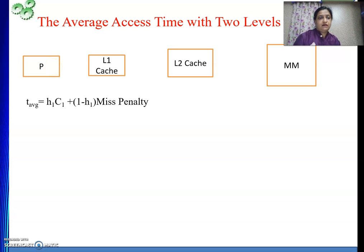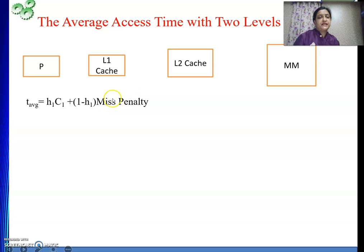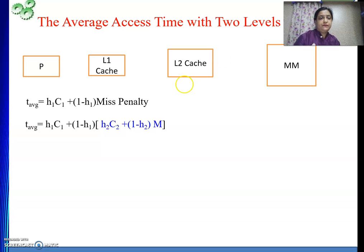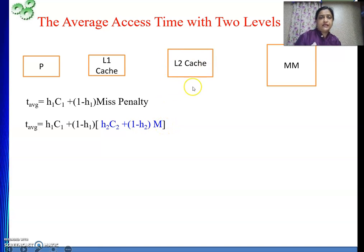The average access time formula is: hit ratio multiplied by cache memory access time, plus failure rate multiplied by miss penalty. So whenever we get a failure in L1, the miss penalty will come from the next levels. That is H2·C2 — getting it from L2 cache — plus (1 minus H2) multiplied by M, the main memory access time, if we do not find it in L2. This is the penalty.